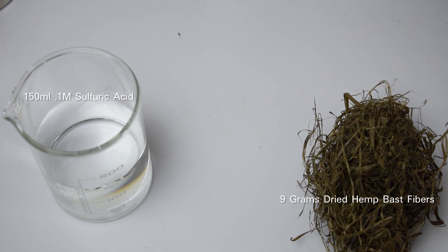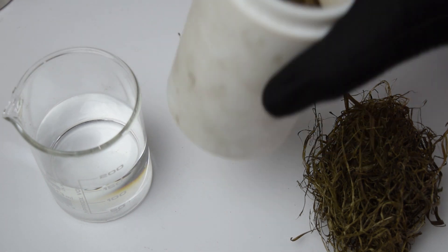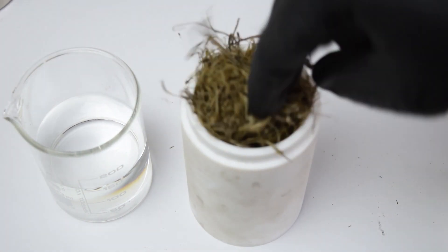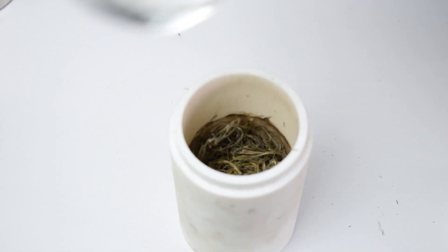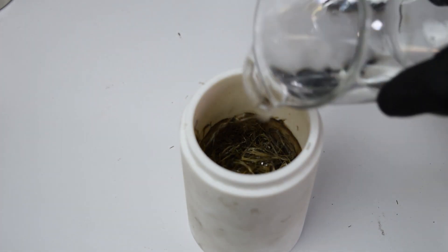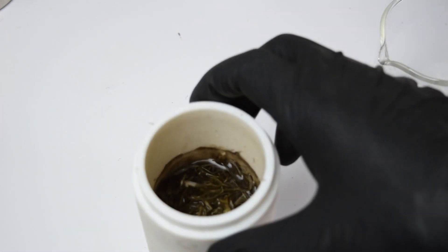9 grams of dried hemp bast fibers are combined with 150 milliliters of a 0.1 molar solution of sulfuric acid in a hydrothermal autoclave. You just need enough solution to submerge the bast fibers.